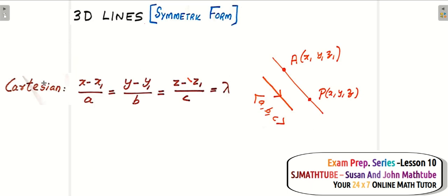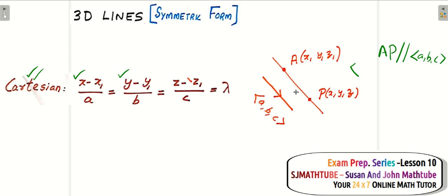So we have the Cartesian equation, and the derivation is really simple. The vector AP is parallel to our direction vector (a, b, c). AP is nothing but (x − x1, y − y1, z − z1). Since the vectors are parallel, they are proportional. For any two parallel vectors, the coefficients are proportional, and that is how we derive the equation. This is called the symmetric form of the line.